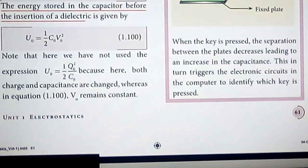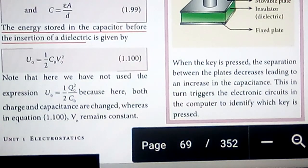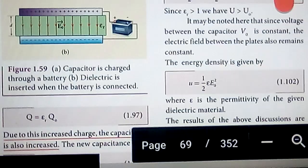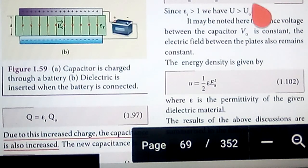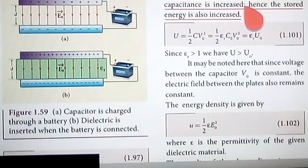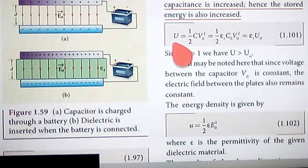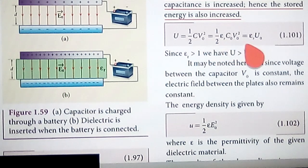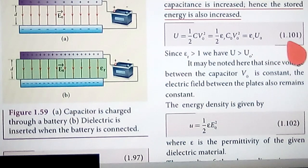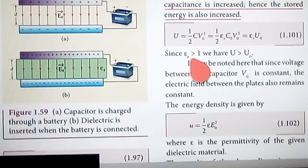To get an expression for the energy after the dielectric is introduced, the capacitance increases and the stored energy also increases. So U = ½ · C · V₀² = ½ · εr · C₀ · V₀² = εr · U₀, which is equation 1.101.